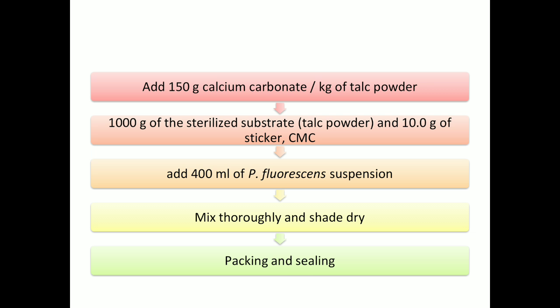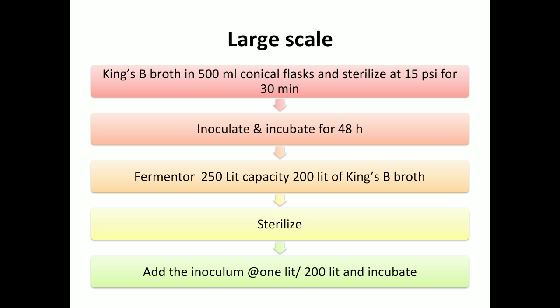Mix it thoroughly and shade dry. Proper mixing should be done to avoid clump formation. Regarding moisture, shade dry until it reaches less than 20% moisture. For packing and sealing, packing should be done in white polythene bags to protect from sunlight. Sealing should be done with a sealing machine, leaving some space for aeration.